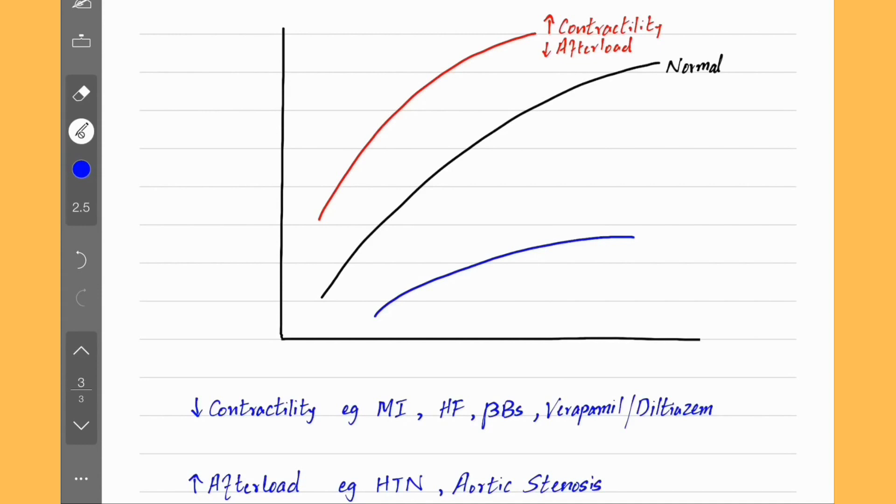On this new curve, cardiac output is reduced compared to normal curve for the same amount of preload.